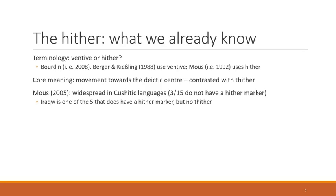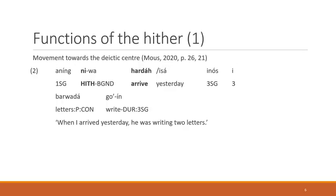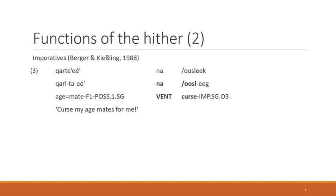As I already mentioned, some of the functions of the hither are already known, and I'll go through these with you now, giving you an example of each. The first should be no surprise — it's the prototypical function of movement towards the deictic center. Here you see that 'when I arrived yesterday, he was writing two letters,' and the hither combines with the lexical verb 'arrive,' which in and of itself is movement towards the deictic center.